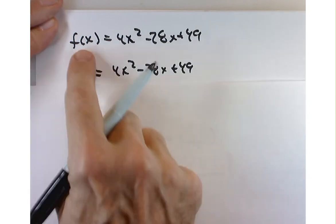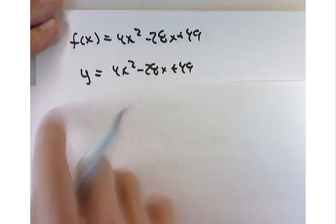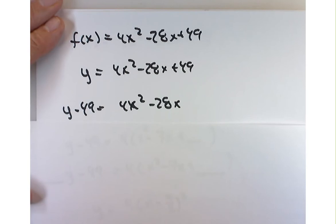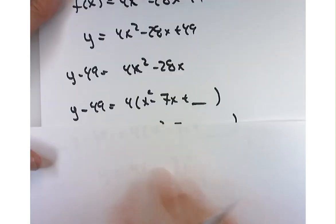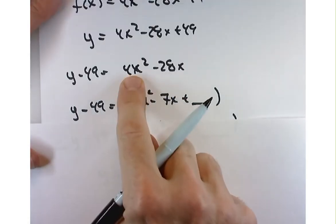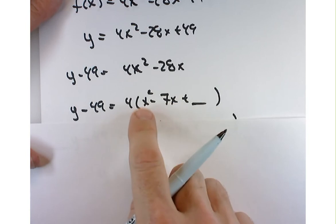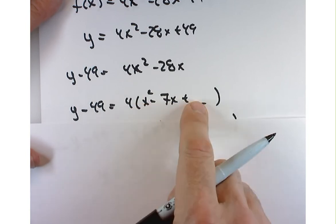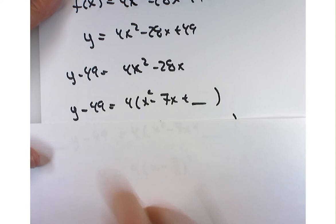So we'll replace f(x) by y. I'll move 49 to the other side. I just start going through these things out of habit. I factor out the 4 because I know I need to complete the square, and I want a 1 in front of my x squared term. Great. I got a minus 49 over here.